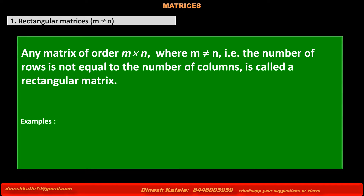Now see the examples. The first matrix contains elements 6 and minus 9. This matrix has 2 rows and 1 column, meaning the number of rows is not equal to the number of columns. So it is a rectangular matrix.